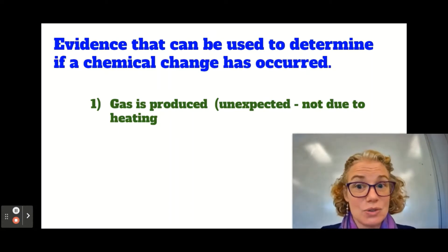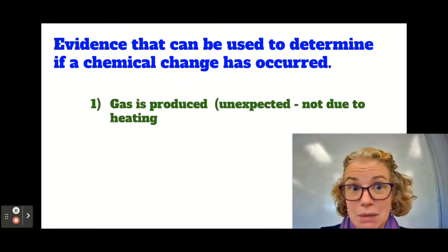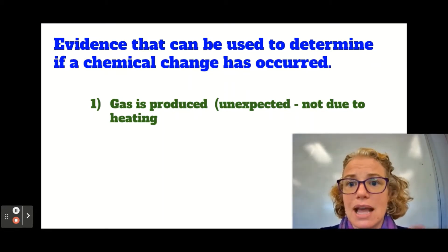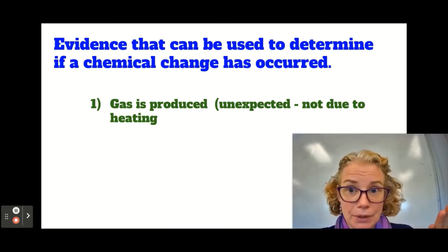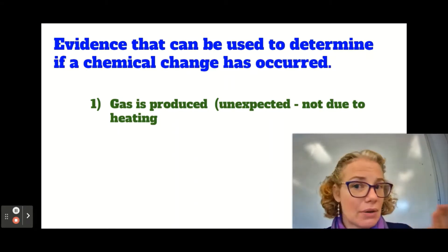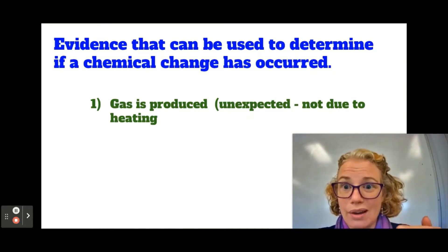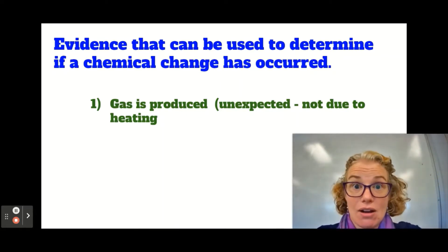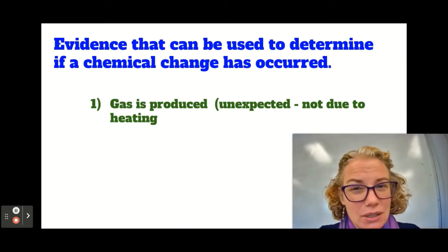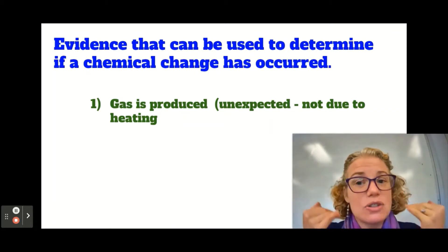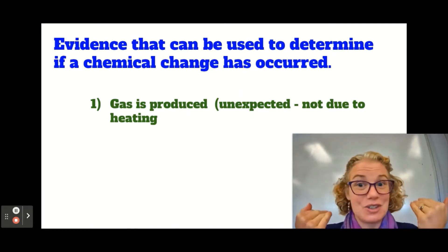Now, you still have to use your brain, because it's got to be unexpected gas being produced — not just because you heated something. For example, of course it's going to bubble if you boil water. But that would count as a physical change because it's still water; it's just water vapor in the air. It's still water before and after, even though it bubbled and even though there was gas produced. So you've got to do some thinking. You can't just say there was gas produced, therefore it's a chemical change.